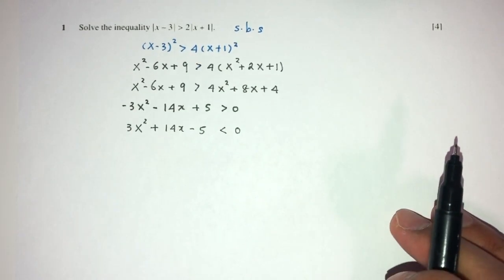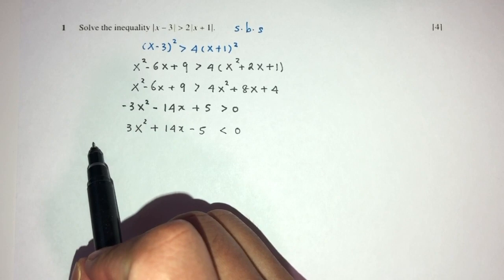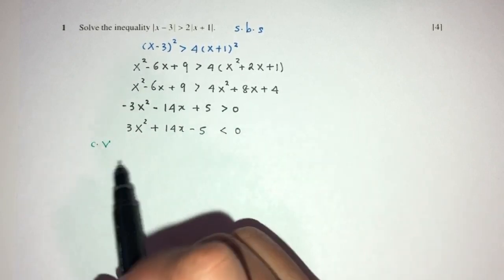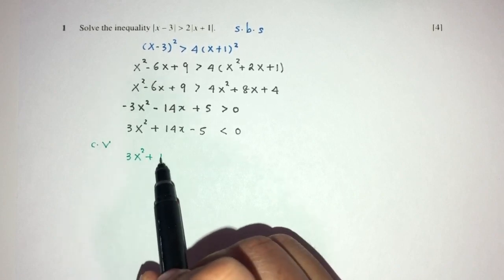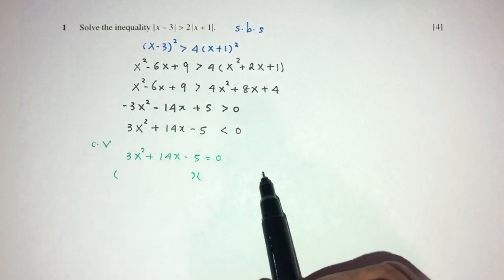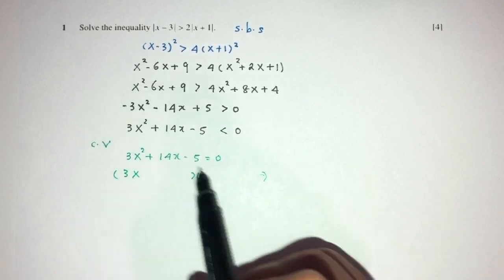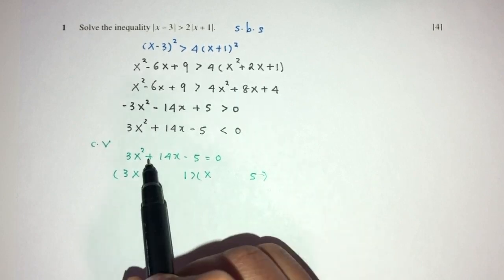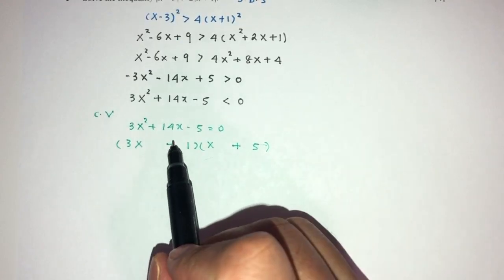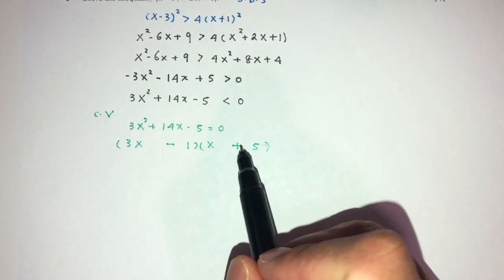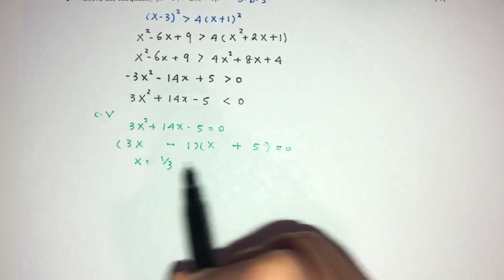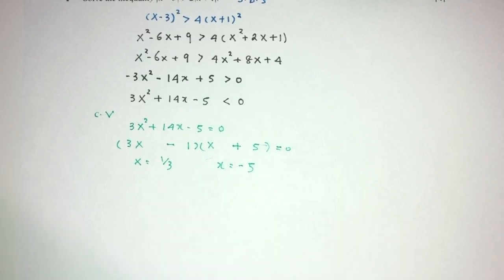Now we have to find the critical values of this equation. As we've seen in A-level math, we equate it to 0 to find the critical values. Factorizing: 3x times x, and 5 is 5 times 1. To get plus 14 we need plus 15 minus 1. So x will be 1 over 3 and x will be minus 5.